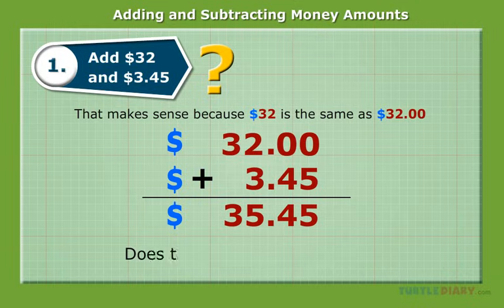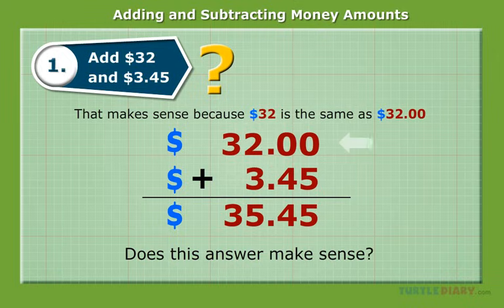Does this answer make sense? Yes, $32 plus around $3 should be around $35, which it is.